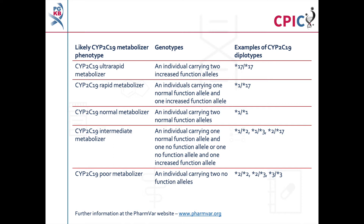An important caveat for all genotyping tests is that any alleles which are not detected in the assay are designated as star 1. This can include rare increased function, reduced function, and non-functional alleles which are not routinely screened for in some genotyping tests. Further information about CYP2C19 alleles can also be found at the PharmVar website at www.pharmvar.org. A link to PharmVar is also given in the description below this video.